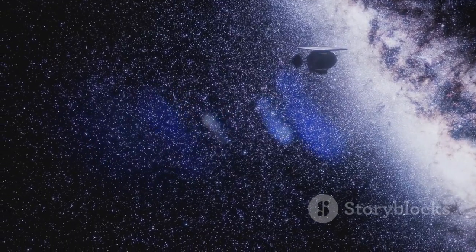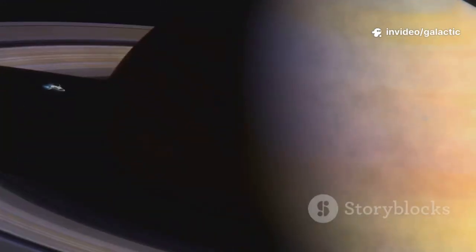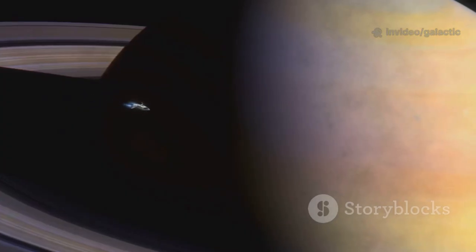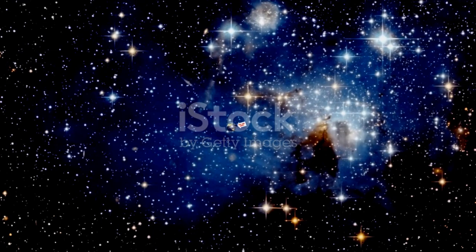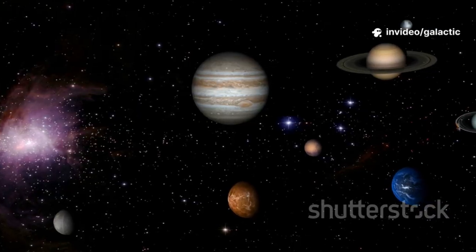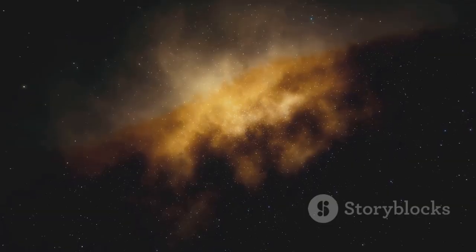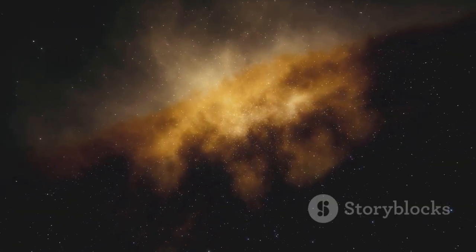Every major discovery shifts our perspective, and this one is no different. Now, with Voyager 2's discovery, we see our solar system as a complete entity with a complex, fiery shell moving through the galaxy. It gives us a sense of place, a cosmic address with a more defined front door. We're not just floating in the void; we're in a dynamic relationship with the galaxy. Our sun's bubble pushes back against the interstellar medium, creating this newly discovered wall.